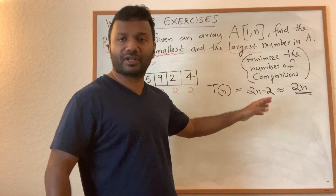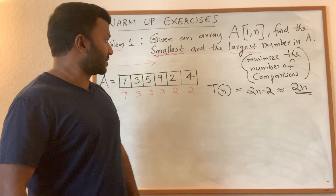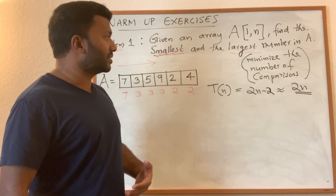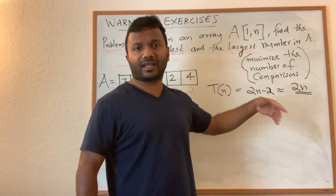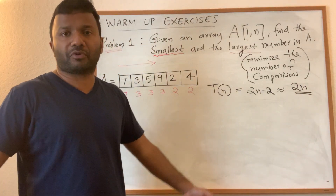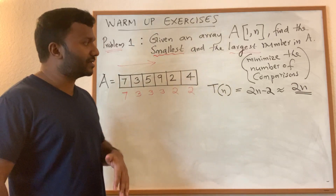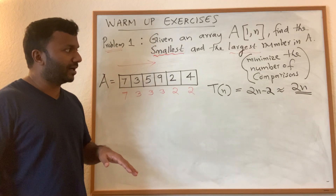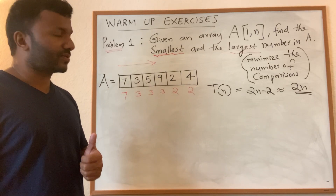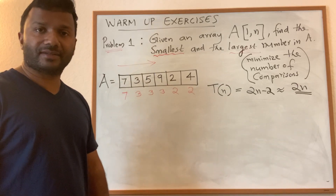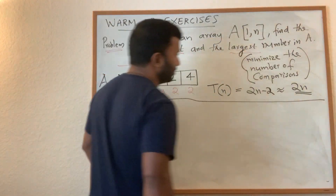We can ignore small constant terms and focus on the dominating factor. Now the question is: can we improve this? Can we get a coefficient smaller than 2 — like 1.8, 1.5, or 1.2? If you haven't seen this before, please pause the video and try to solve it yourself. Don't give up easily.